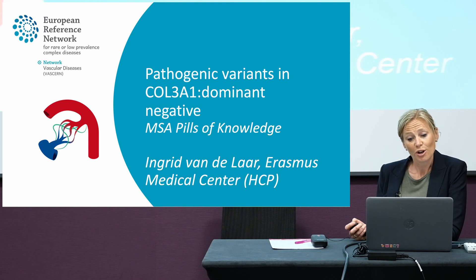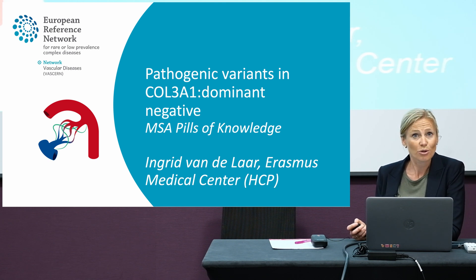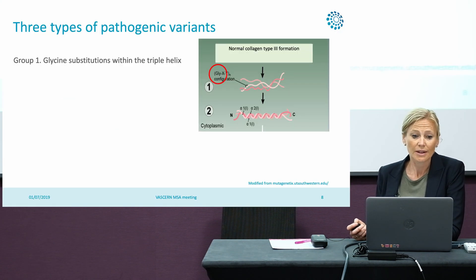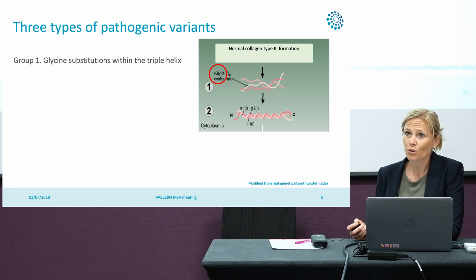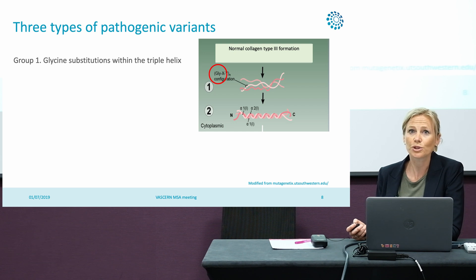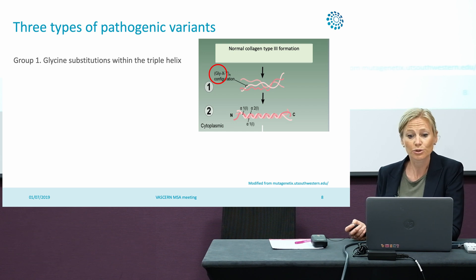In this part of the talk, I'd like to talk about the variants that cause a dominant negative effect. We have three types of pathogenic variants in the COL3A1 gene. The first one are the glycine substitutions within the triple helical domain.